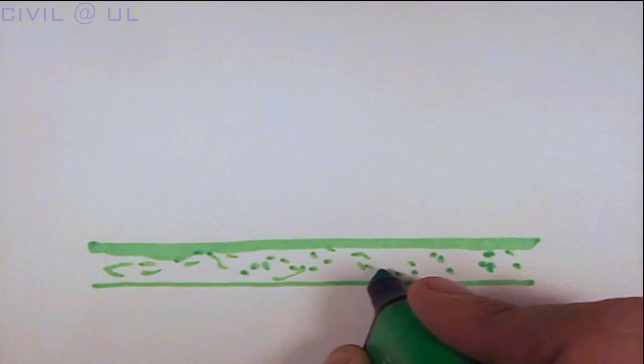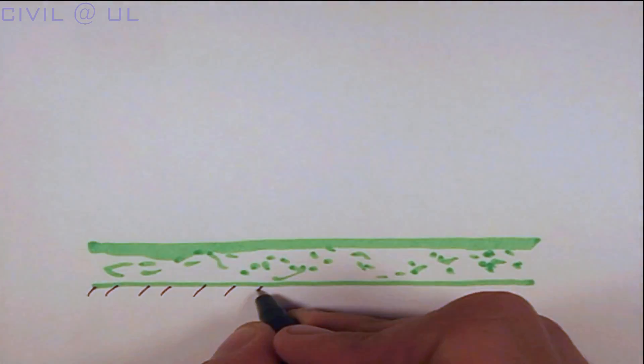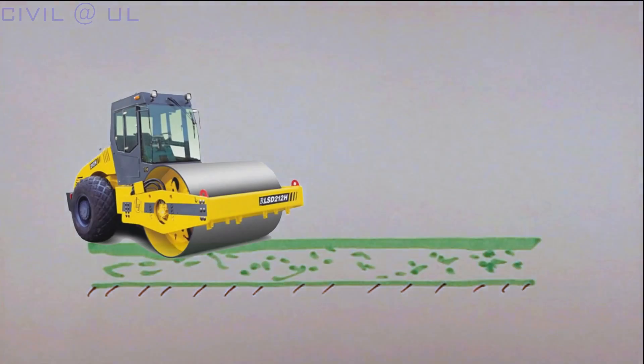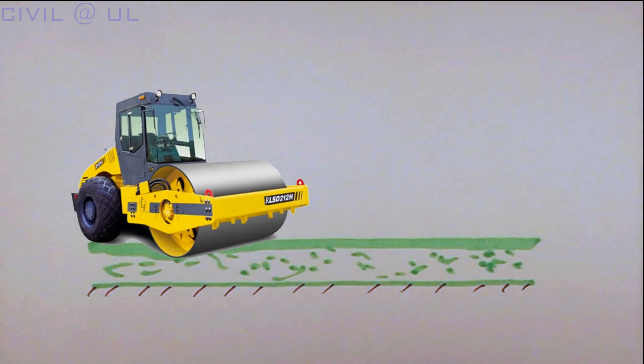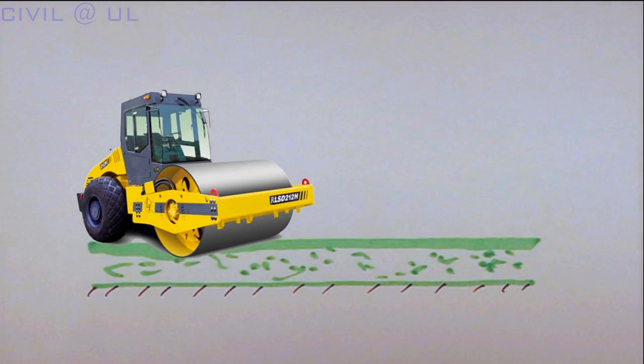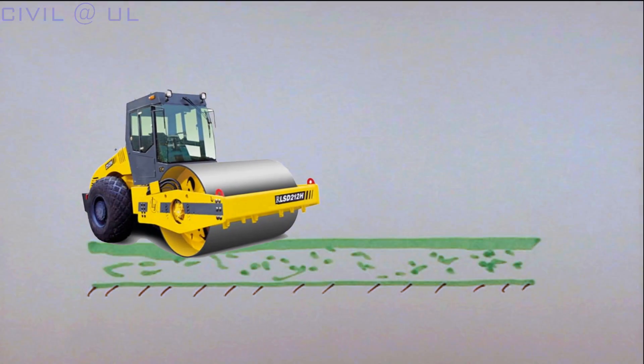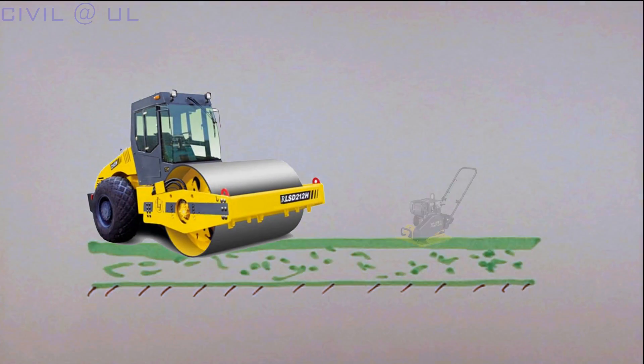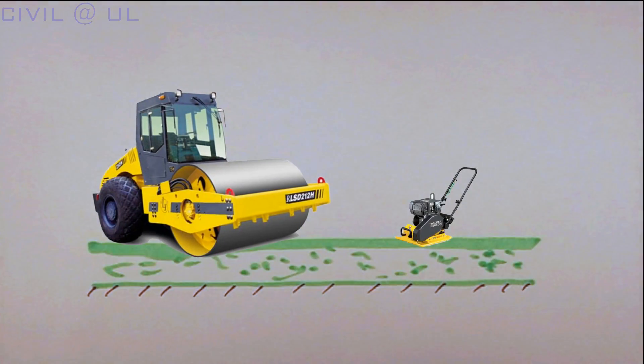For coarse-grained soils such as sands and gravels, smooth drum rollers are popular. And for small areas, whacker plates may be used.